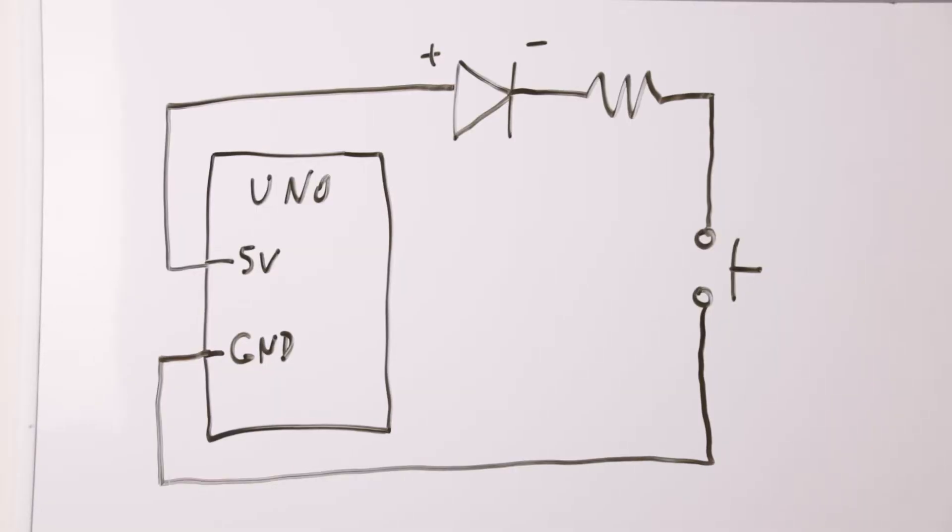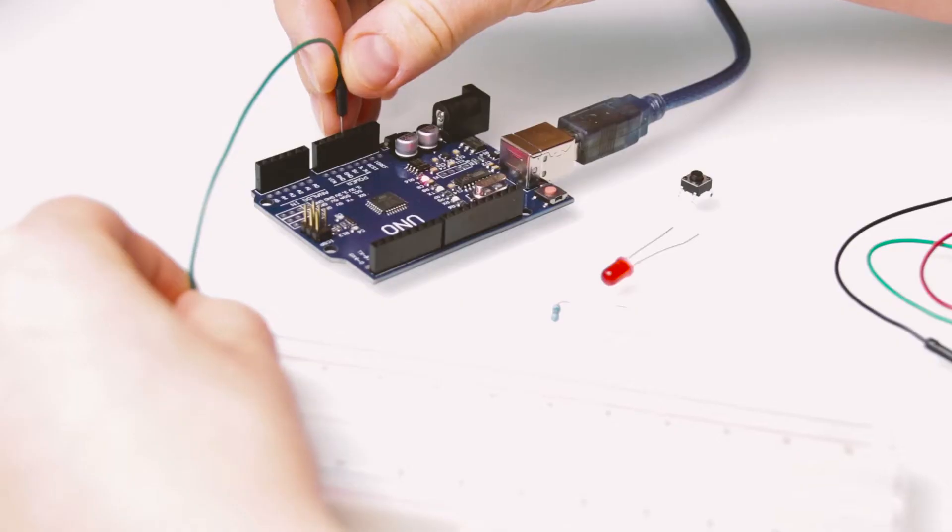Let's first make a simple circuit to better understand how the push button works. 5 volt power pin will be connected to the positive side of the LED. LED negative will connect to the 220 ohm resistor. The other end of the resistor will be connected to the push button. The other end of the switch will connect to the ground pin. Now let's do the wiring.